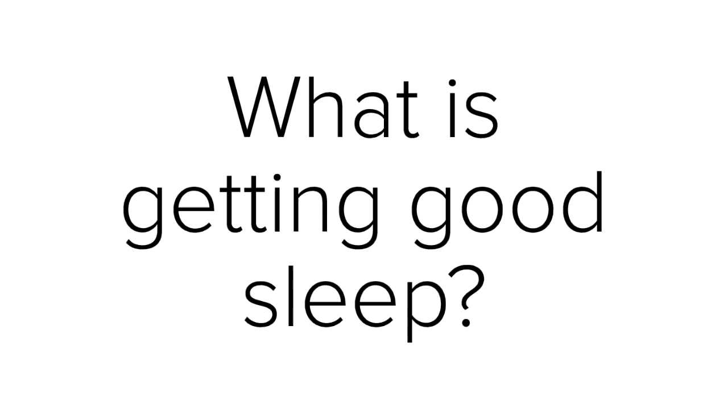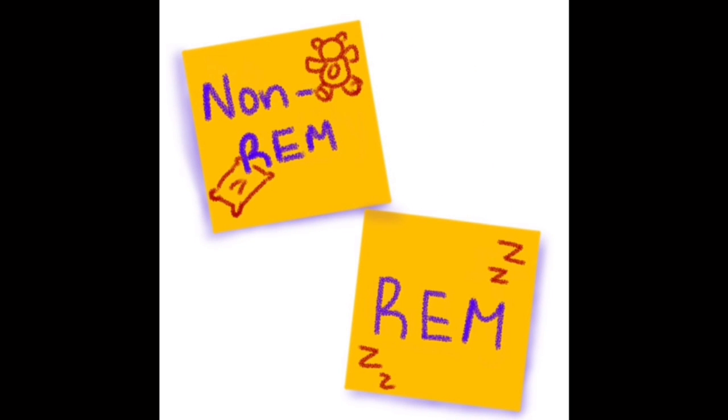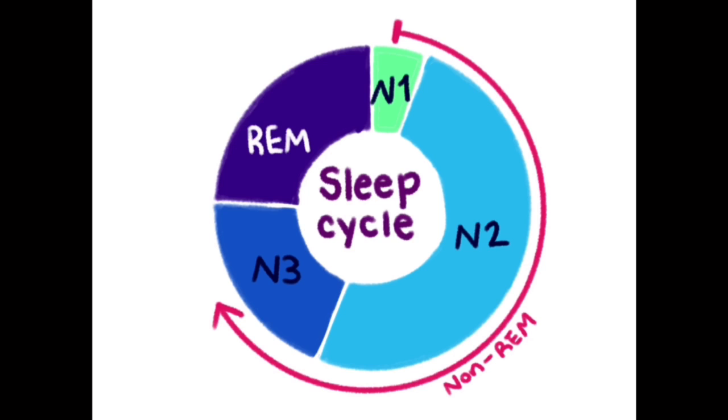But what is the process of getting good sleep? There are two distinct classes of sleep, REM and non-REM sleep. Non-REM consists of three different stages for a total of four distinct stages of sleep.